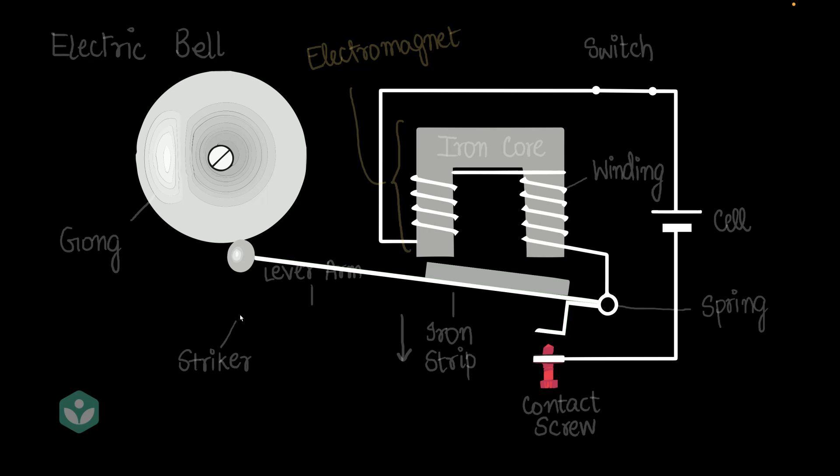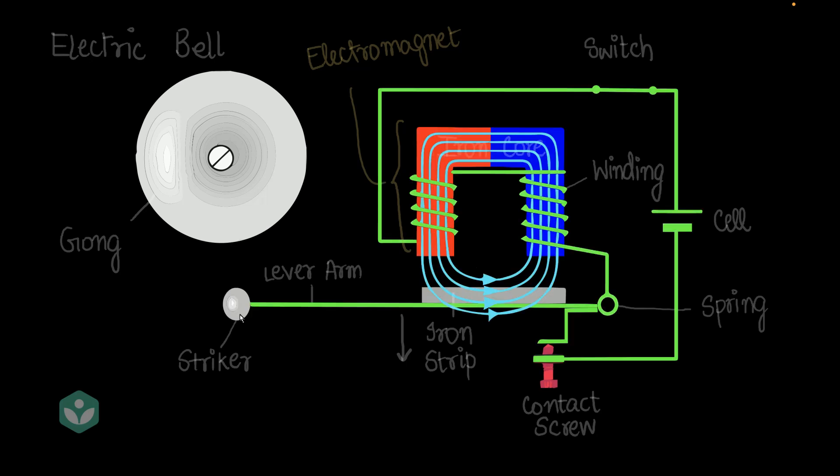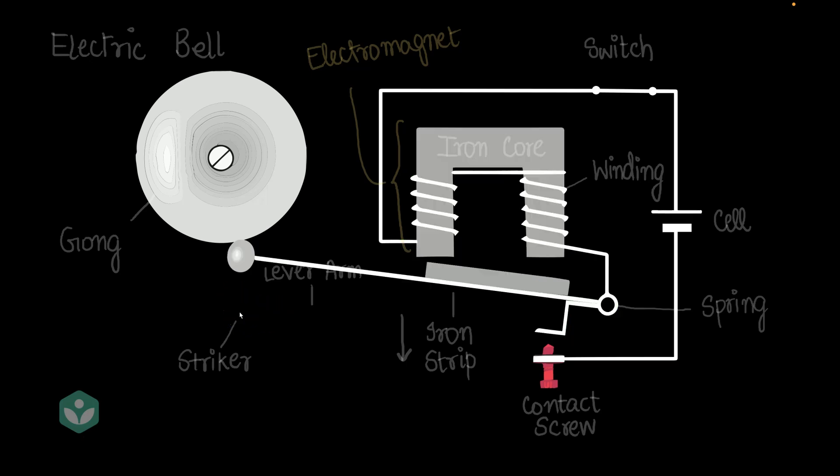Interesting, isn't it? Let me play this back once again. So, what's happening here? This electromagnet is applying an upward force, is attracting this iron strip in the upward direction. And that causes the striker to go and strike the gong.